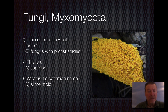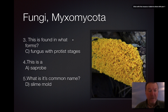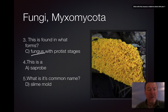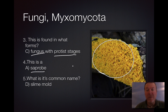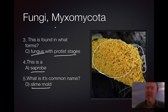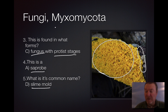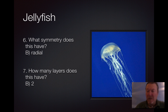The next specimen was Fungi. The question asks what form it is found in. Fungi are usually found with protostages — reproductive stages where they gather together. They are saprobes, meaning they live off of decaying material and are usually found on decaying wood. The common name is slime mold — Kingdom Fungi, Division Myxomycota.